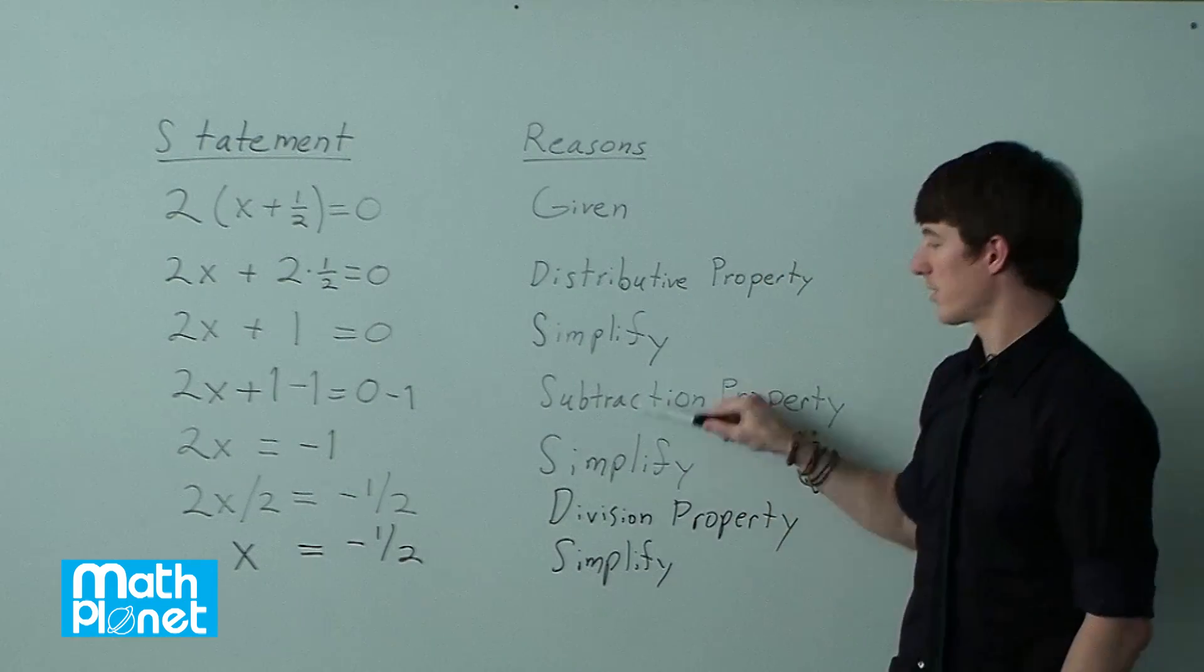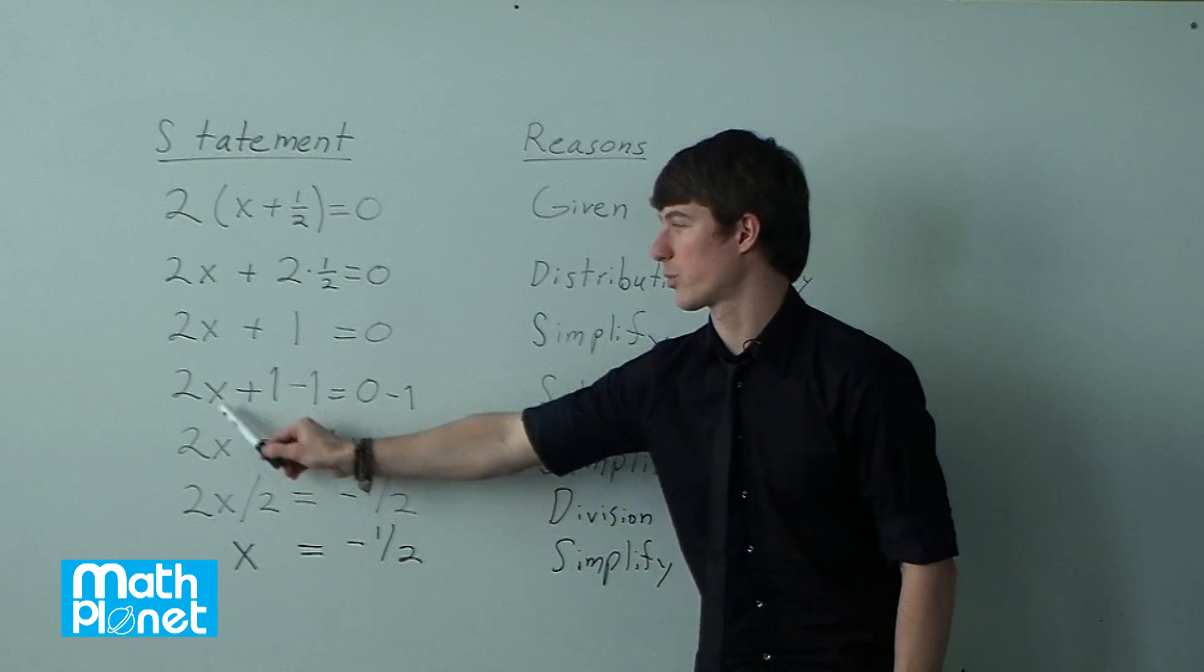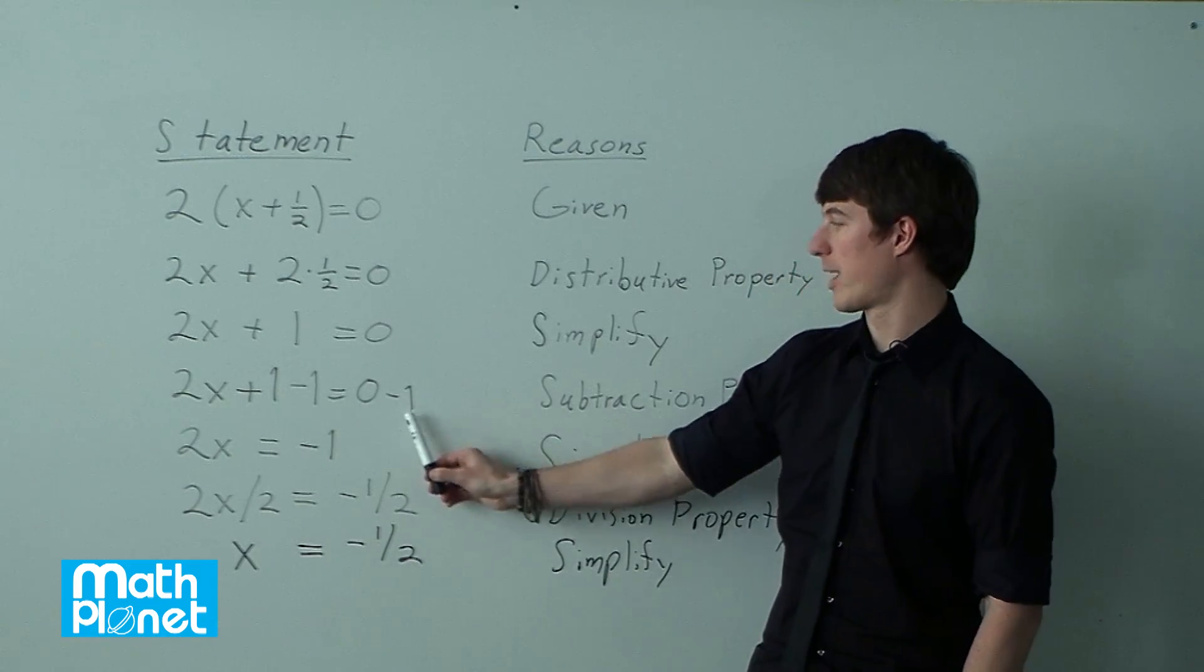So when we do that, then we simplify. And 1 minus 1 is 0. So we're just left with 2x. 0 minus 1 is negative 1.